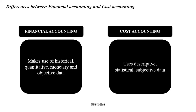Financial accounting makes use of historical, quantitative, monetary, and objective data, whereas cost accounting uses descriptive, statistical, and subjective data. Cost accounting is subjective because it also focuses on estimating — estimates are prepared as part of cost accounting, so the data can be subjective, descriptive, or statistical. Financial accounting, on the other hand, is focused on monetary, quantitative, historical, and objective data — there is no question of estimations in financial accounting.